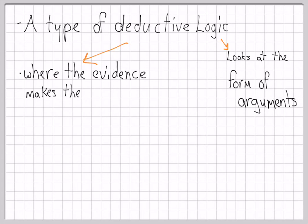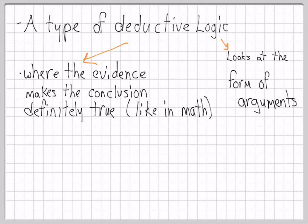What makes a logic deductive is that the evidence makes the conclusion definitely true whenever the evidence is true. Mathematical arguments are deductive.